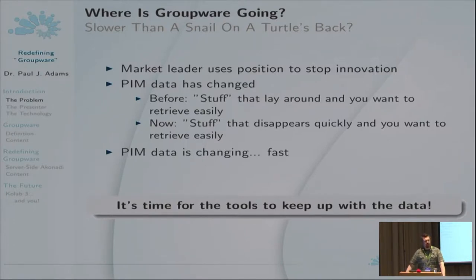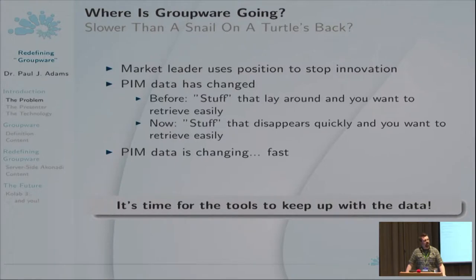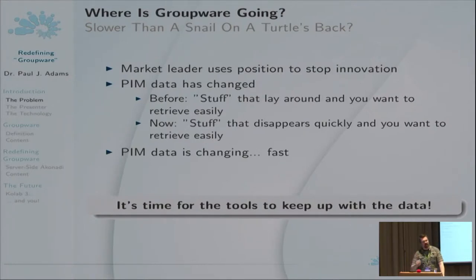When you think about modern PIM — a person using Facebook, Twitter, Google+, or any of these services — it's not data that's lying around. It's data that you pretty much throw away immediately. But then a month down the line you might just want it back. Anyone who's tried to retrieve a message from Facebook or Google+ from a month or two previous knows it's not easy, because they're designed to be throwaway data. But it's still PIM data — still personal information that you're putting out there — and at some point you might want to tie it together to an event.